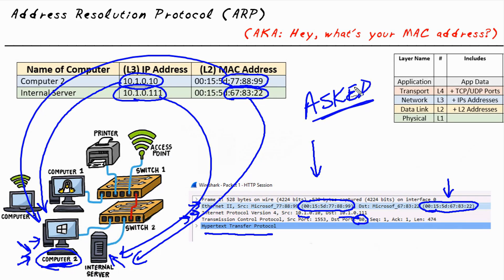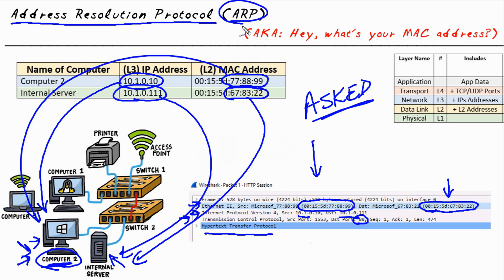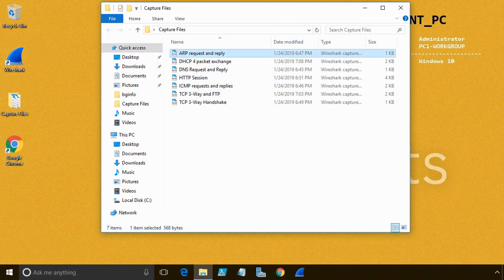If Computer 2 didn't know what the server's Layer 2 address was on the same local network, it would send a broadcast — everyone would see that broadcast. Then the server, when it sees the broadcast, would reply back to Computer 2 saying: I saw your request — you're looking for the Layer 2 address associated with my IP address — here it is. The set of rules for how to ask for a Layer 2 address and get a response on an Ethernet network is called the Address Resolution Protocol, or ARP.